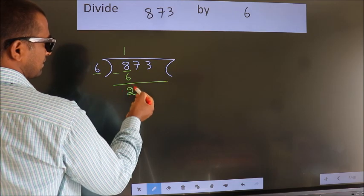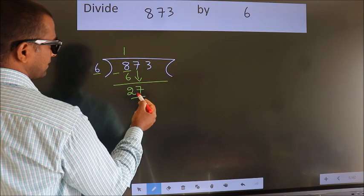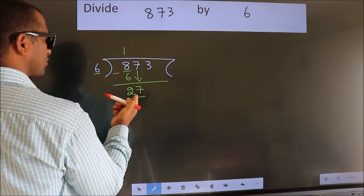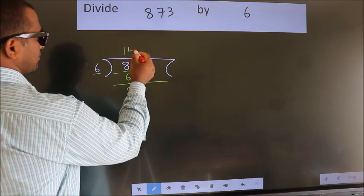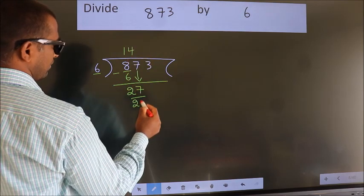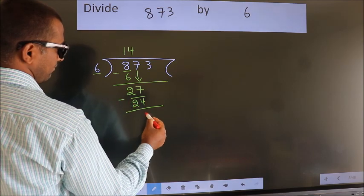After this, bring down the beside number. So, 7 down. So, 27. A number close to 27 in 6 table is 6 times 4 equals 24. Now, we subtract. We get 3.